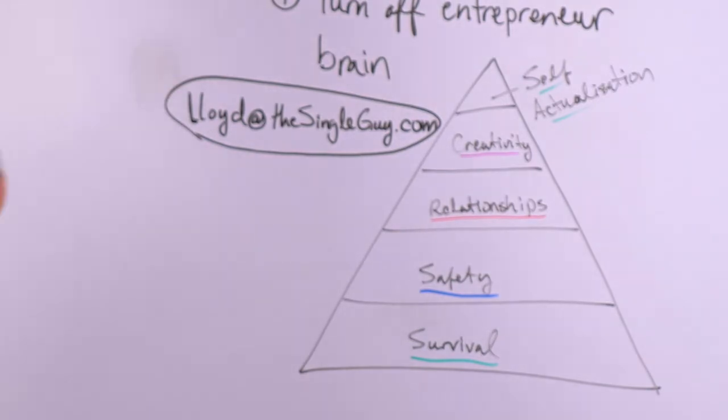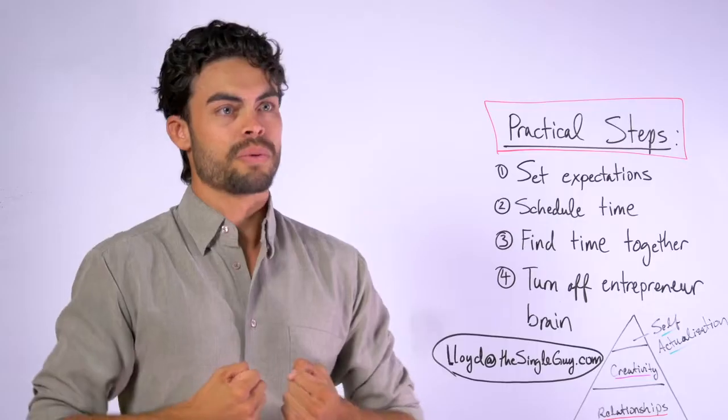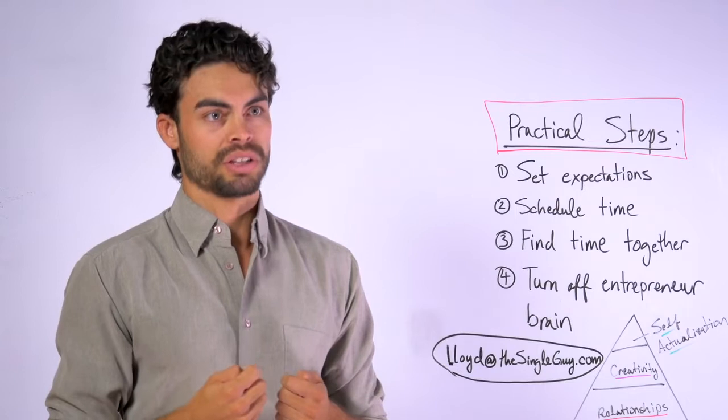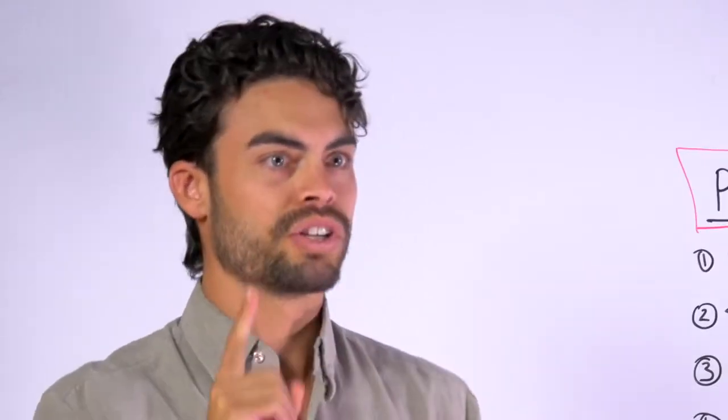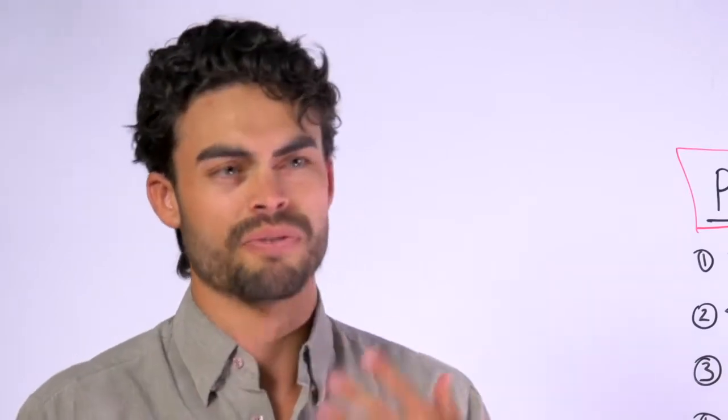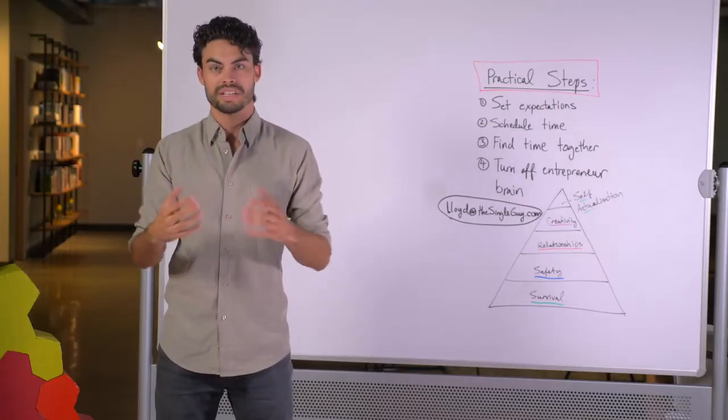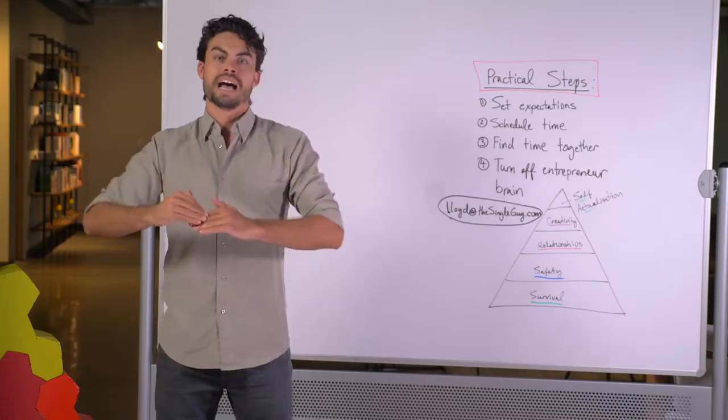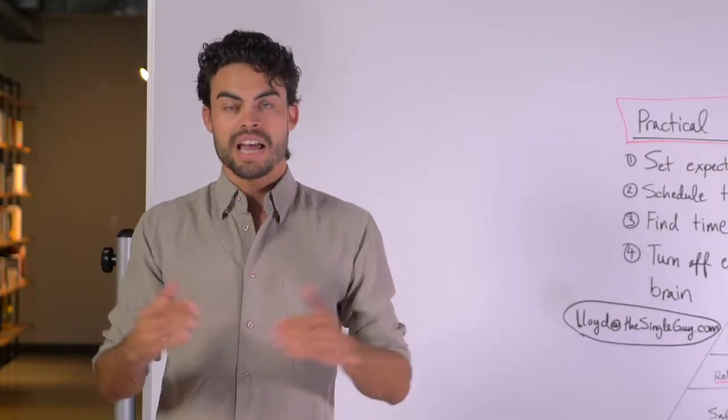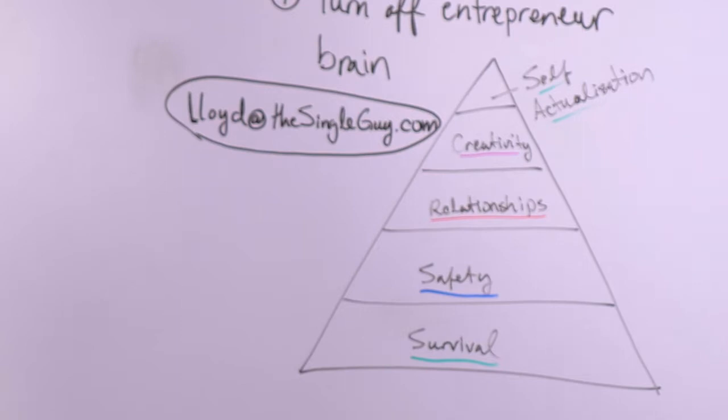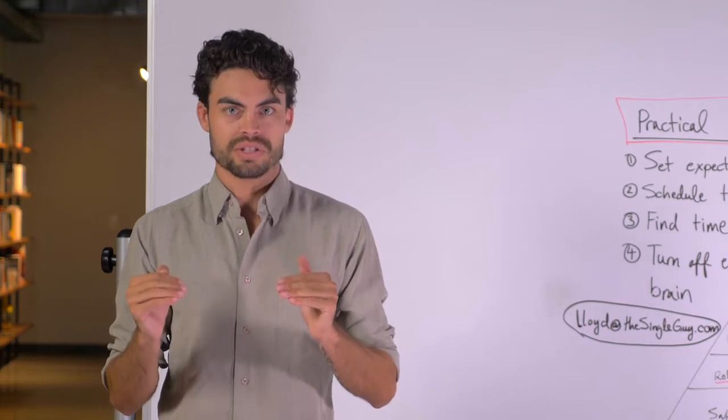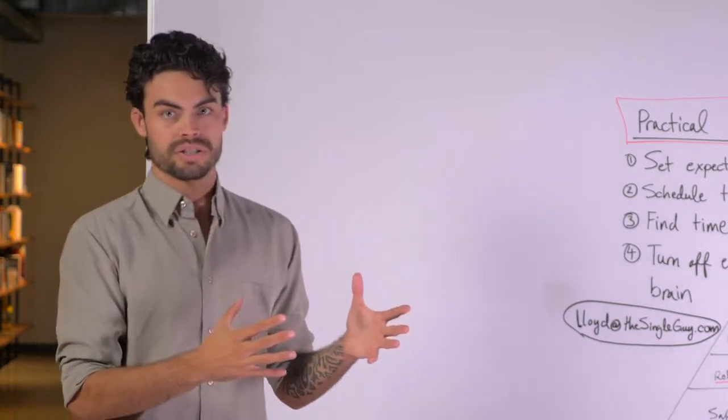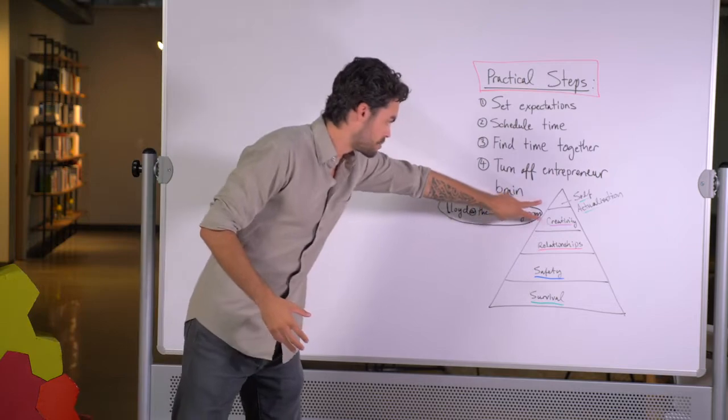So Maslow's hierarchy of needs basically talks about why it's so important that we keep our relationships solid in our own lives. Now if you look at what the basic needs of a human being are, number one, we are looking for things that are gonna help us survive. We need food, we need shelter, we need those kinds of things. That's at the very base. Above that is gonna be your basic safety needs. Then above that is gonna be your relationships, the things that are making you happy, and the things that are making you feel fulfilled in life. If you're not satisfying those things, it's going to be hard for you to tackle the other areas of your life, which are the top two right here.